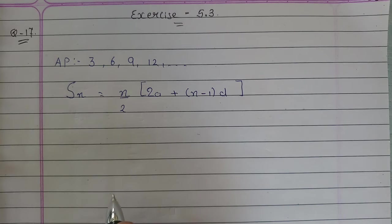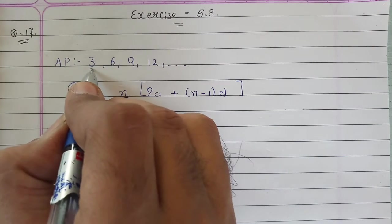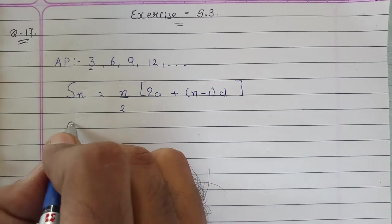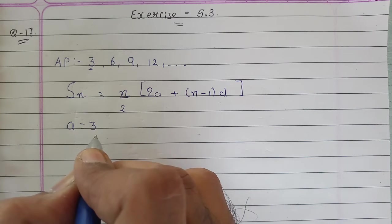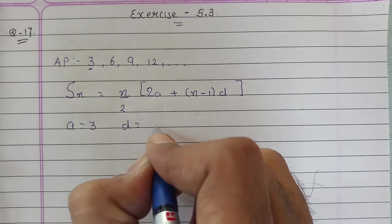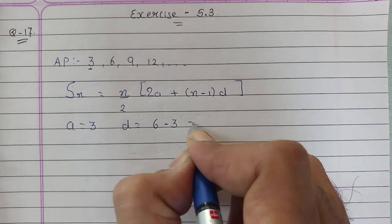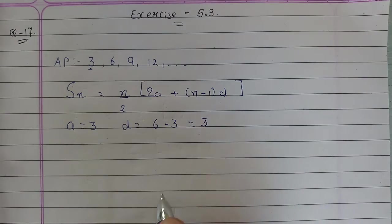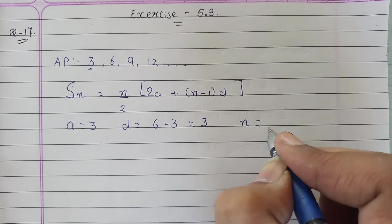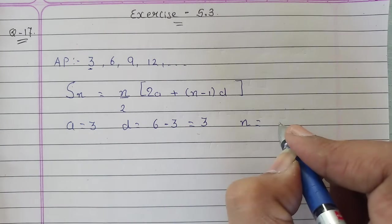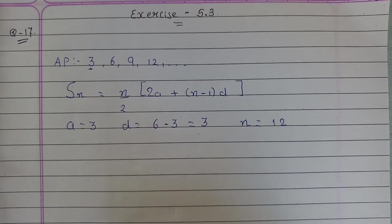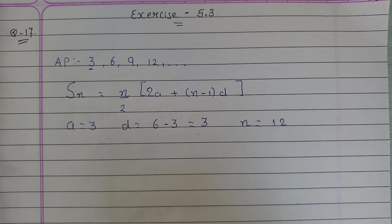Now, we need A, N, and D. The first term A will be equal to 3. Then, the common difference D, which is second term minus first term, is equal to 3. And the total number of classes is 12, so N will be equal to 12.